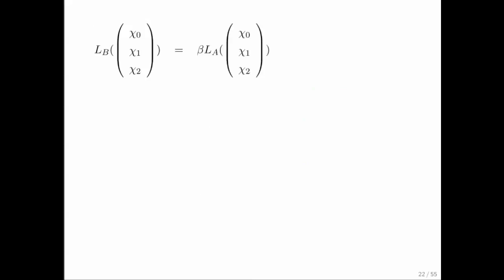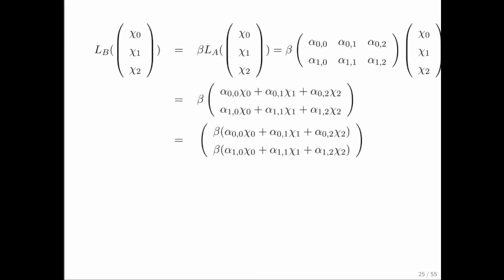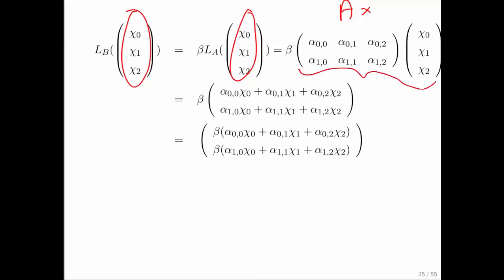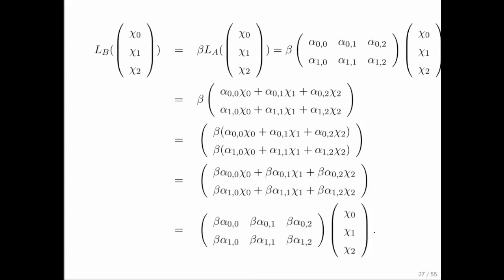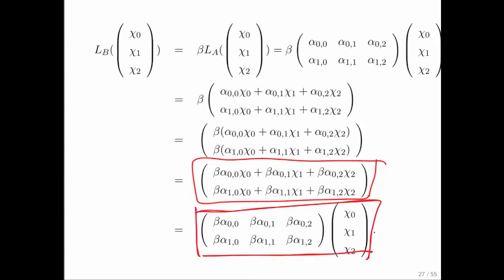Let's verify that this matrix actually represents L sub B. We expose the components of x, plug x into L sub A, which equals A times x. We know how to multiply a matrix times a vector, giving us a result vector. We scale that vector by beta. We can then distribute beta across the components, and recognize the result as the matrix-vector multiplication with our scaled matrix. Therefore, this matrix indeed represents the linear transformation L sub B.